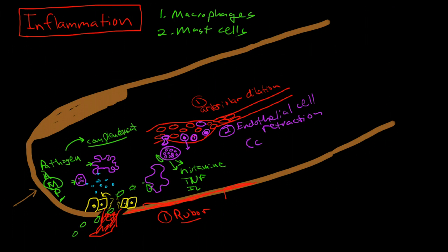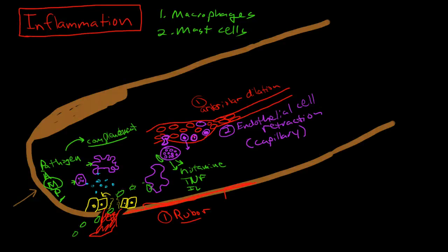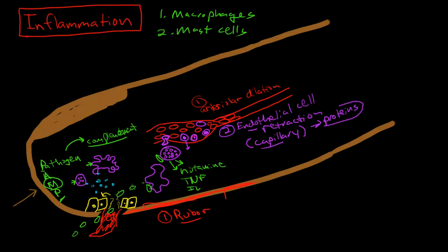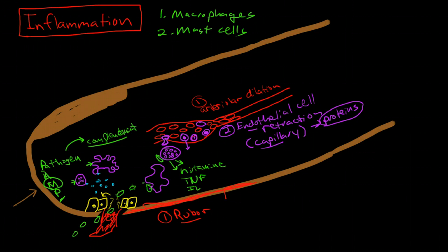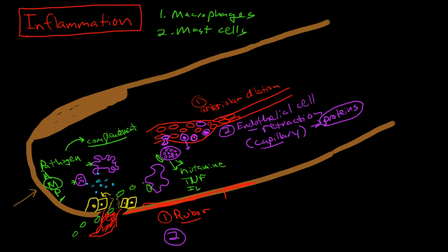Number two here is endothelial cell retraction, which leads to capillary leak. The capillaries are usually impermeable to proteins - they only allow water and electrolytes to pass through - but when there is inflammation the capillaries begin to leak proteins. This allows the complement proteins, clotting proteins, and the kinin-kallikrein proteins to get into the tissue.